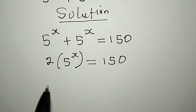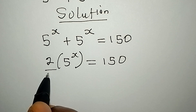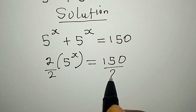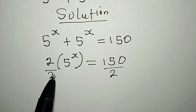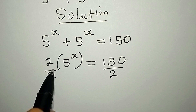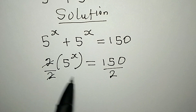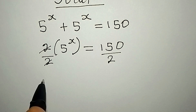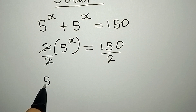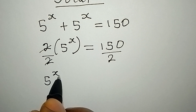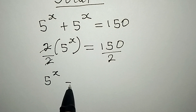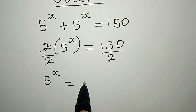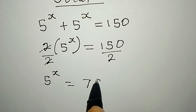And then we can just divide both sides by 2. This cancels out, and now 5 to the power of x is equal to 75.